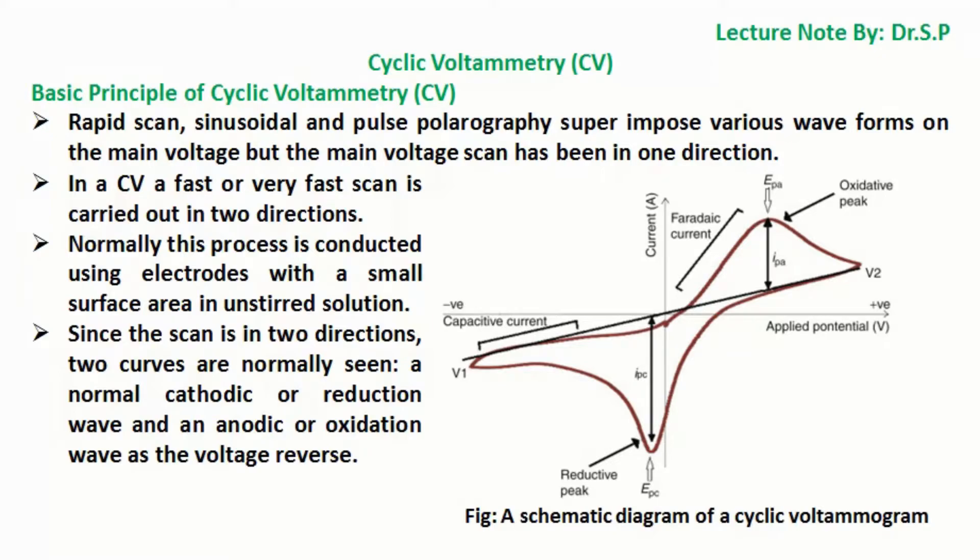A schematic diagram of a cyclic voltammogram highlighting the peak cathodic potential EPC, peak anodic potential EPA, cathodic current IPC, and anodic current IPA is shown here.